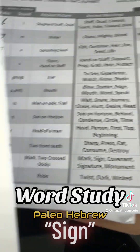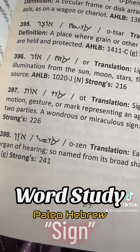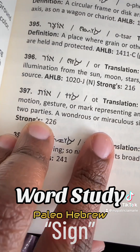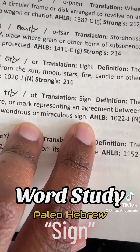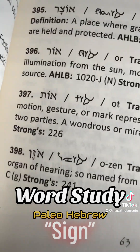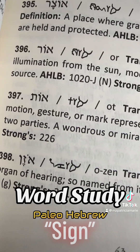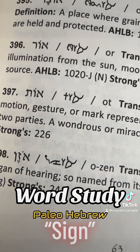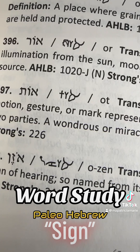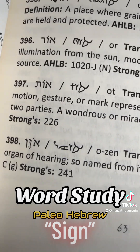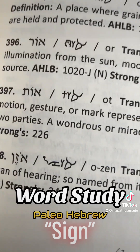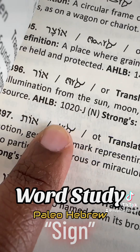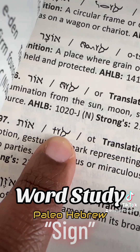The other thing in his book that really made me just be like, 'yo' — it says it's a motion, gesture, or mark representing an agreement between two parties, a wondrous or miraculous sign. Paleo-Hebrew is way, way back when they were just using symbols, not words. Is Christ not a sign? Is the crucifixion not a sign? Do y'all see that? The cross, the Y symbol, and the ox head.